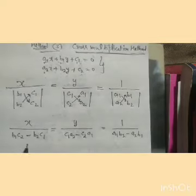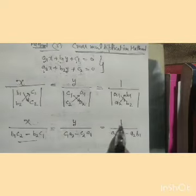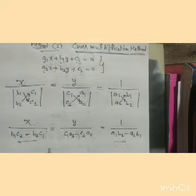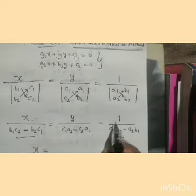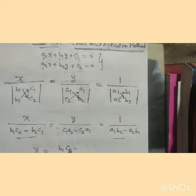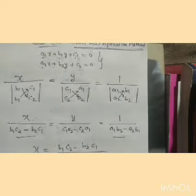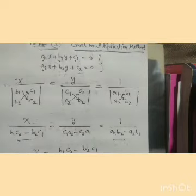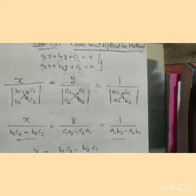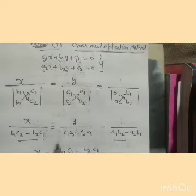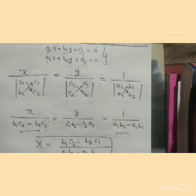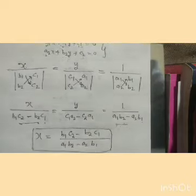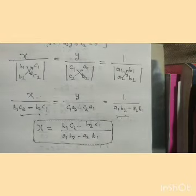To find the value of x, we take cross multiplication. x is equal to B1 times C2 minus B2 times C1, divided by A1 times B2 minus A2 times B1.